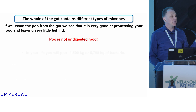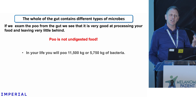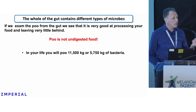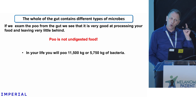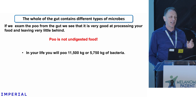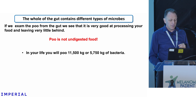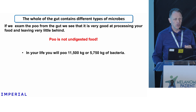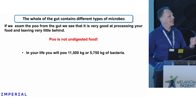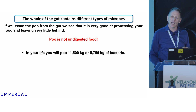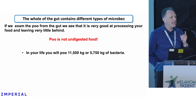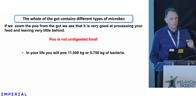Your large intestine contains up to about two kilograms — a bag of sugar's worth of material — making it one of the most densely populated systems on Earth. There's nothing anywhere on Earth that has that much bacterial biomass in it. If we examine the poo from the gut — which is what we do, it's not ideal — it doesn't tell us about everything happening in there, but it's what we can easily access. Poo is not undigested food; your gut is brilliant at extracting all that it needs from your diet.